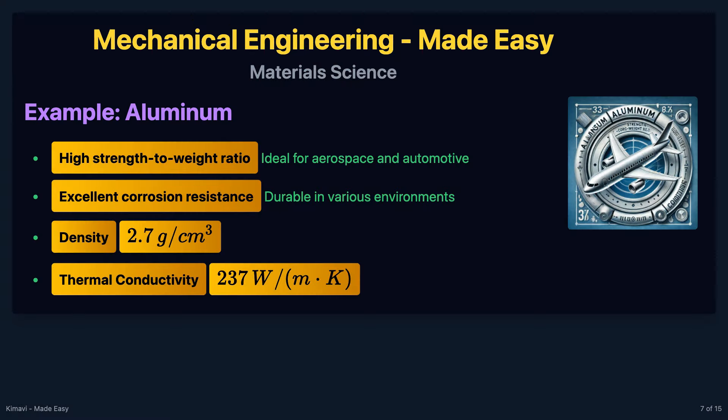Aluminum is widely used in the aerospace and automotive industries due to its high strength-to-weight ratio and excellent corrosion resistance. The density of aluminum is approximately 2.7 grams per cubic centimeter, and its thermal conductivity is about 237 watts per meter Kelvin.